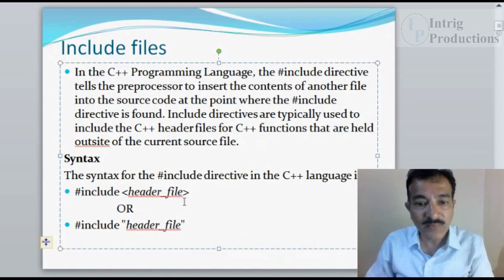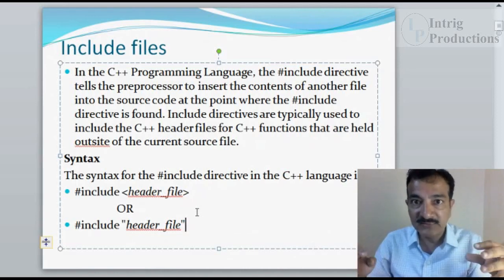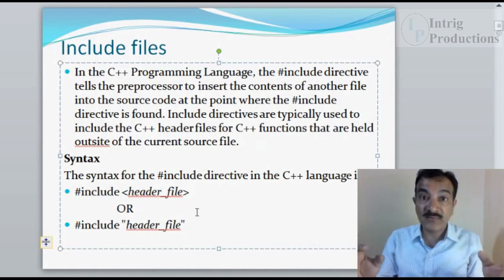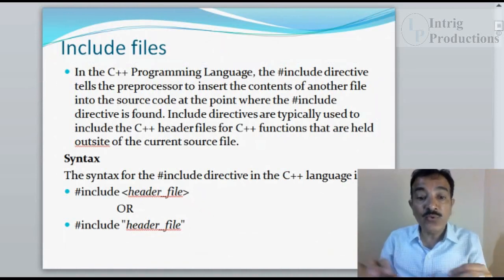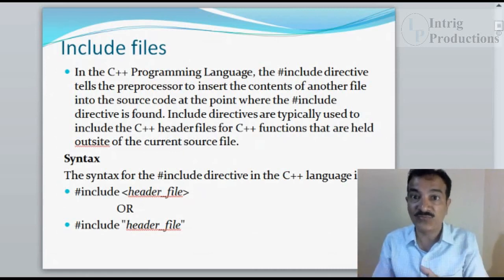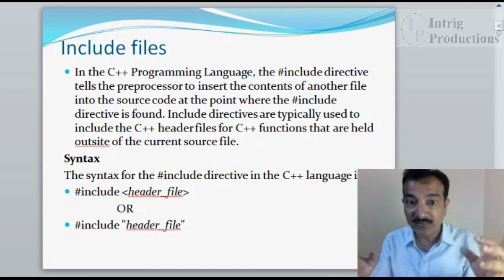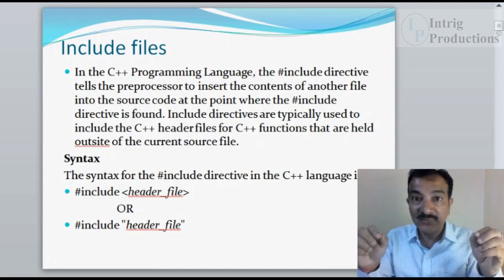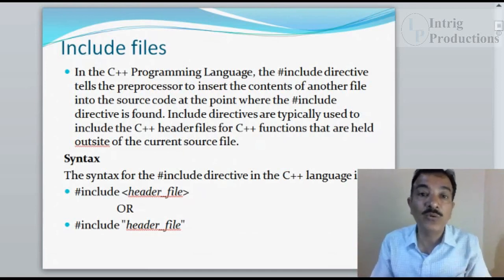The difference between them is: when a header file is enclosed between angle brackets, the compiler searches for that file first in the include directory where all the standard library files are available. If you use double quotes, the compiler searches in your own source file location, not the compiler's include directory. Header files written by you should be enclosed in double quotes when you want to include them in your program.